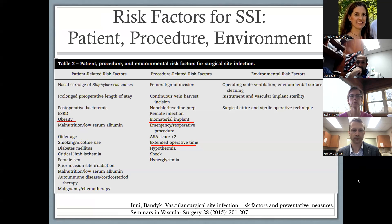There are a number of reviews that do a really good job of identifying all the risk factors for surgical site infection. The bottom line is it's a complex interplay of patient factors, procedural factors, and your environment. Through the literature you can find varieties of evidence pointing to each of these factors as being extremely important or high-risk for surgical site infection.